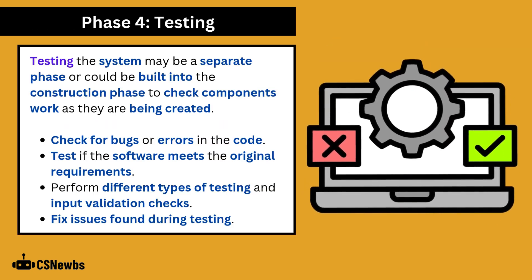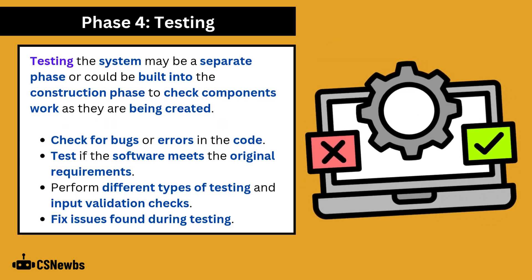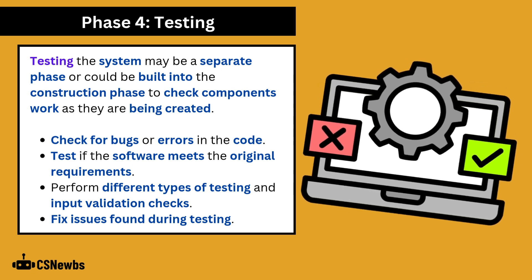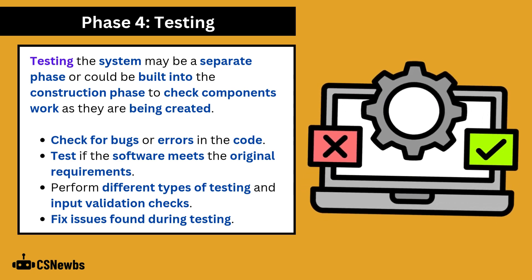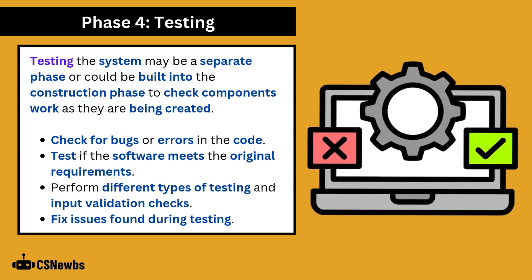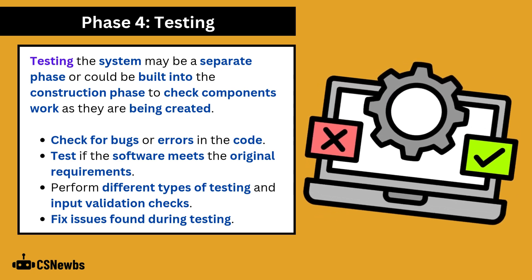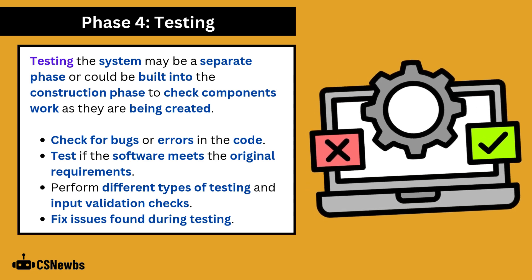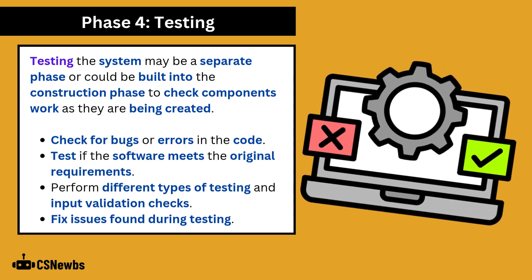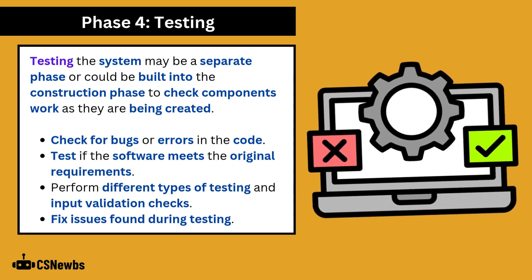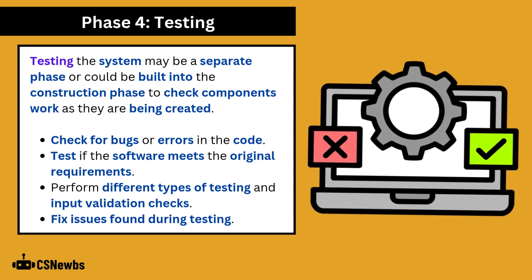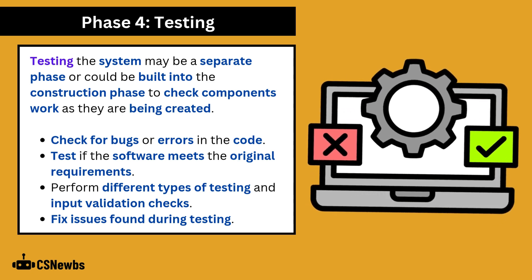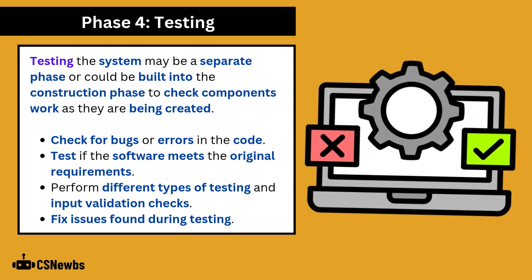Testing the system may be a separate phase, or it could be built into the construction phase to check components work as they're being created. In this phase, programmers will check for bugs or errors in the code, test if the software meets the original requirements, perform different types of testing and input validation checks, and fix any issues found during testing.